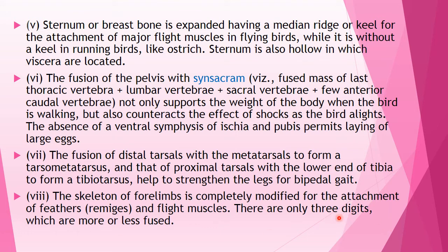There are only three digits in the forelimb, which are more or less fused. Key skeletal features include the synsacrum, tarsometatarsus, tibiotarsus, and the three fused digits.